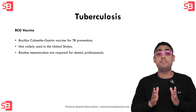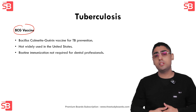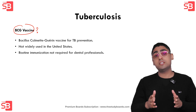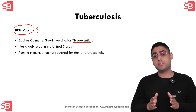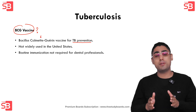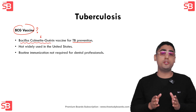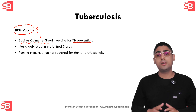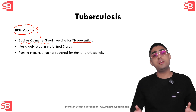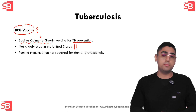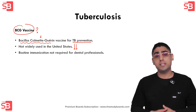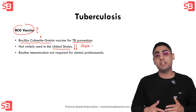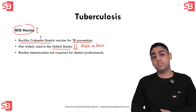Now let's talk about the BCG vaccine. BCG vaccine is given for TB prevention. BCG stands for Bacillus Calmette-Guérin, and this vaccine is used to prevent tuberculosis, especially in countries where TB is common. However, unlike many other countries, BCG vaccine is not widely administered in the United States. The main reason is that the risk of TB infection is relatively low in the US and the vaccine is not considered necessary for the general public.